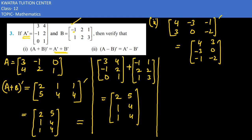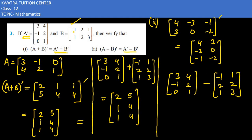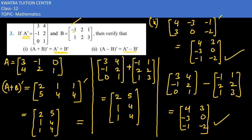Isi tarike se right-hand side ke liye hamen A dash minus B dash karna hai. A dash: 3, minus 1, 0, 4, 2, 1. B dash ka sign lagake subtract karte hain: 3 minus minus 1 is 4, minus 1 minus 2 is minus 3, 0 minus 1 is minus 1, 2 minus 2 is 0, 1 minus 3 is minus 2. Dekho answer verify ho raha hai — left side aur right side equal hain.